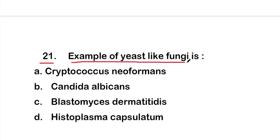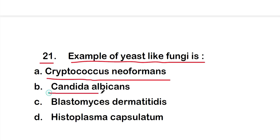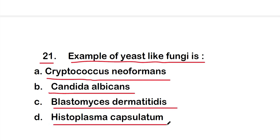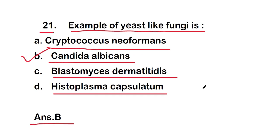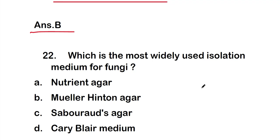Example of yeast-like fungi is: option A - Cryptococcus neoformans, option B - Candida albicans, option C - Blastomyces dermatitidis, or option D - Histoplasma capsulatum. The right answer is option B, Candida albicans, which is a yeast-like fungi.